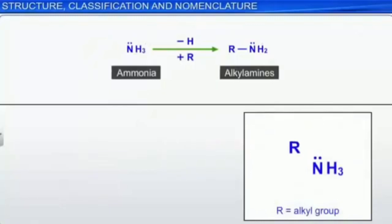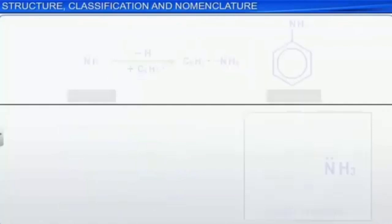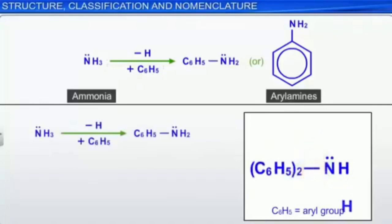When hydrogen atoms in ammonia are replaced by an alkyl group, they are called alkyl amines. When hydrogen atoms in ammonia are replaced by an aryl group — C6H5 group or benzene ring — they are known as aryl amines.